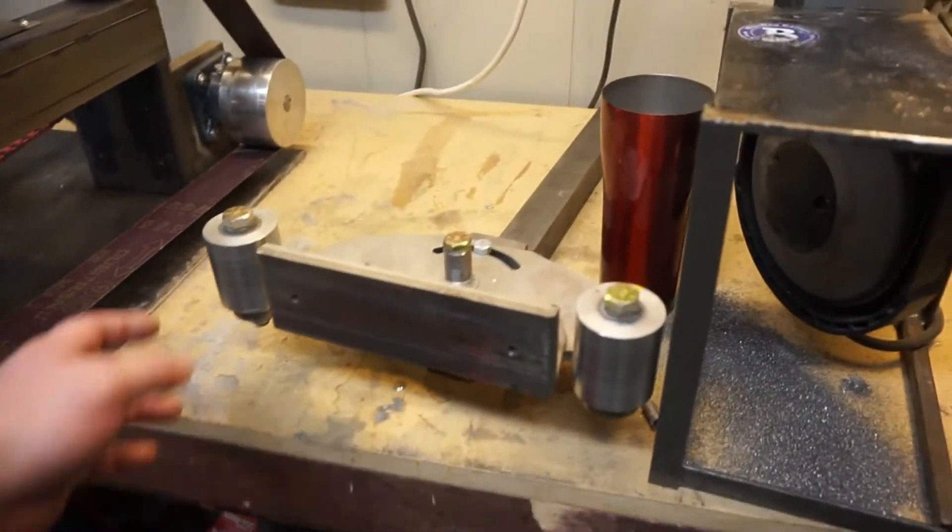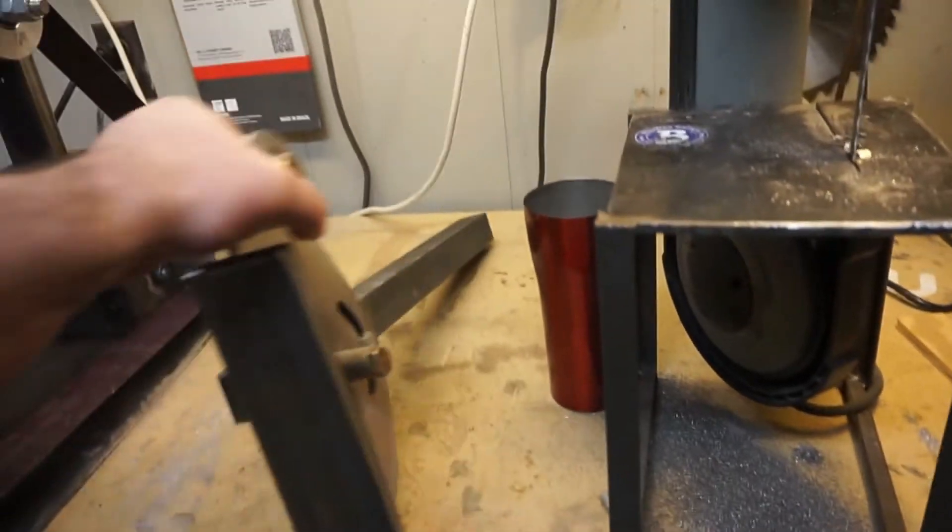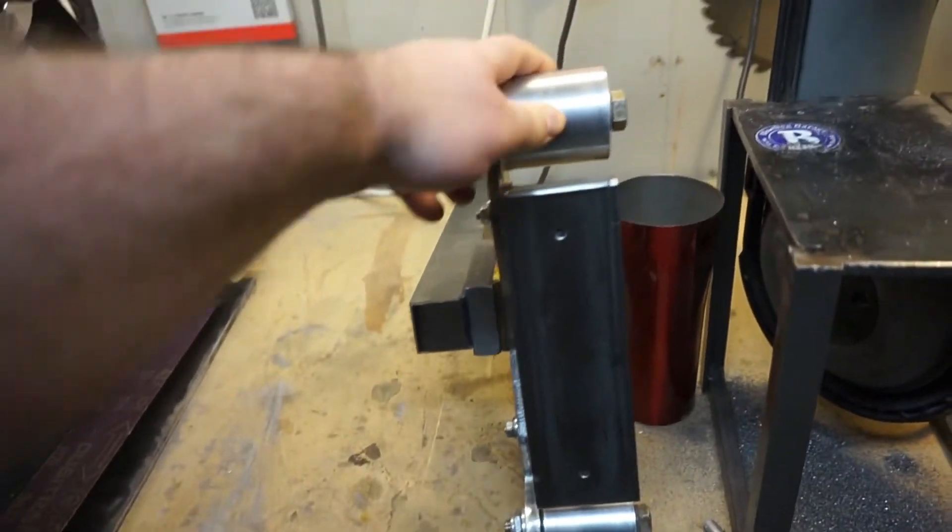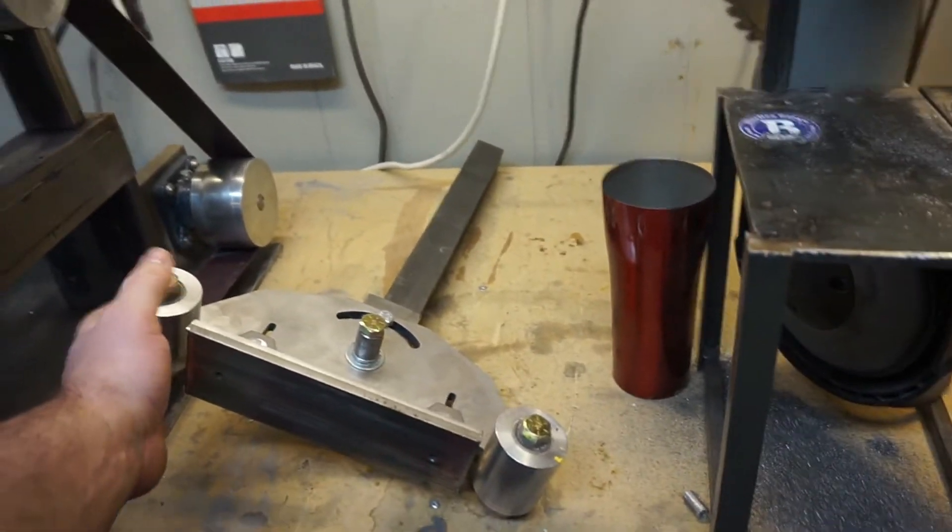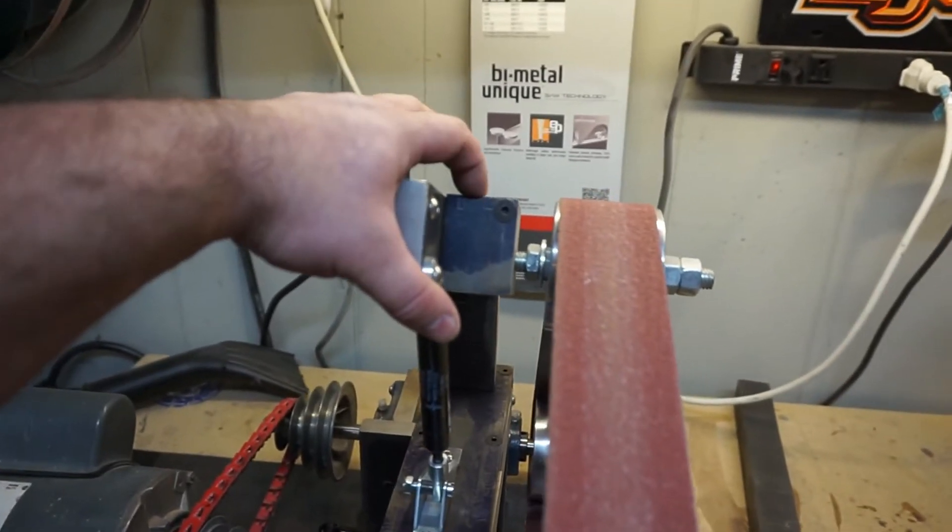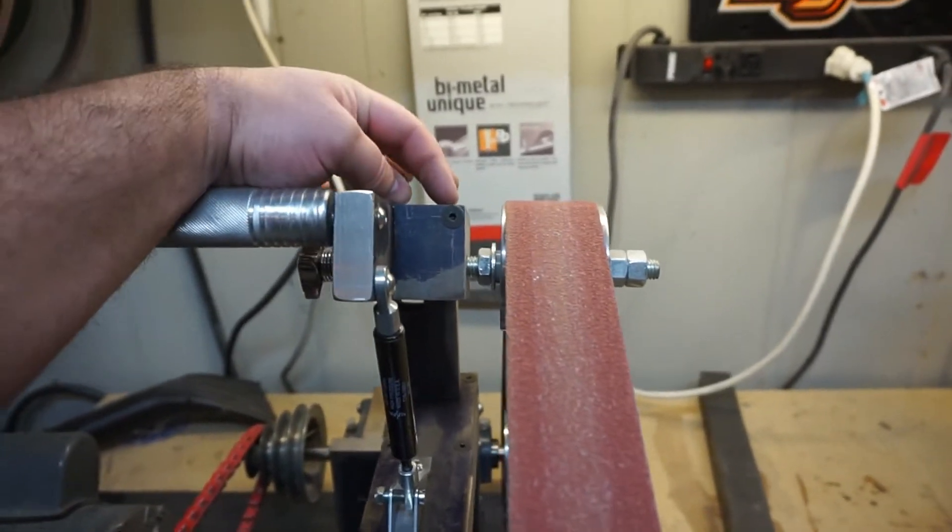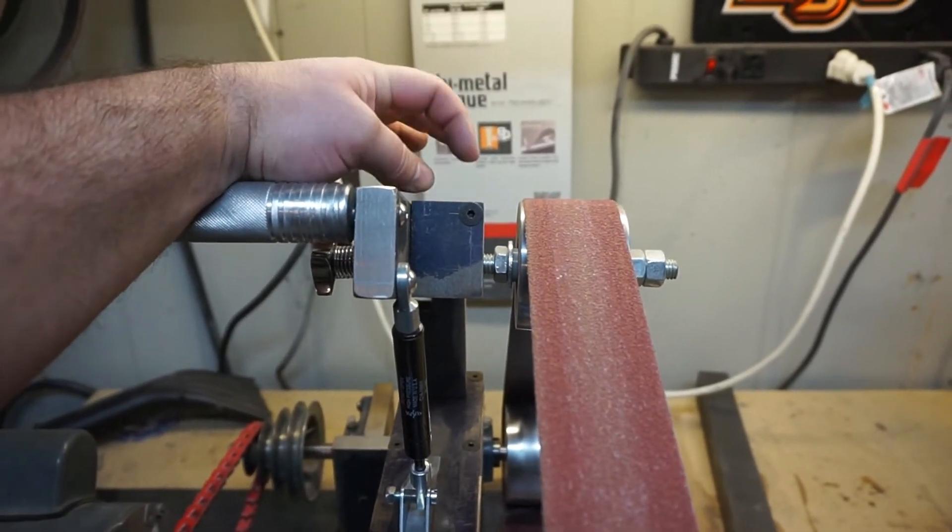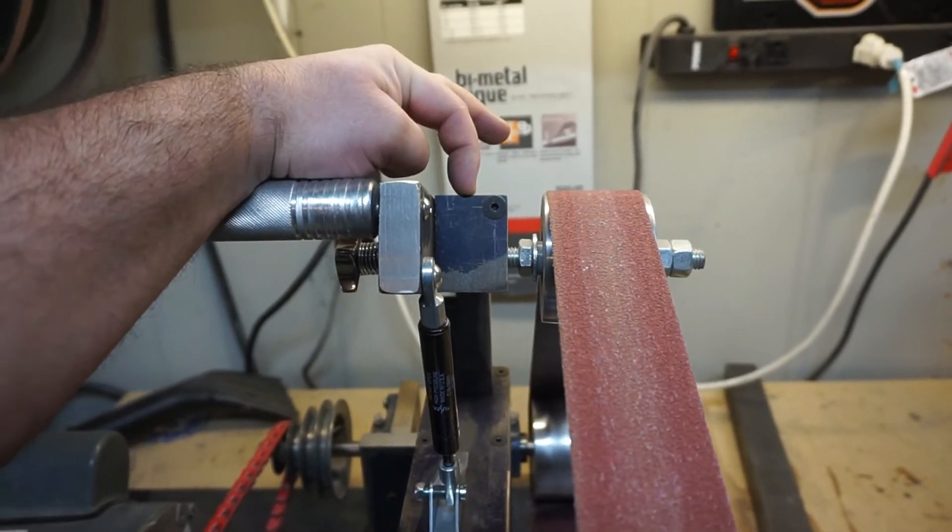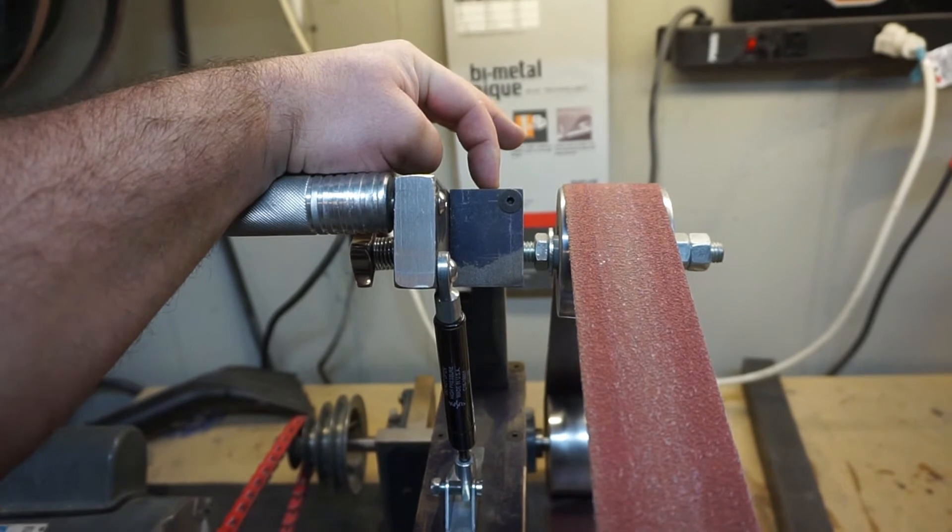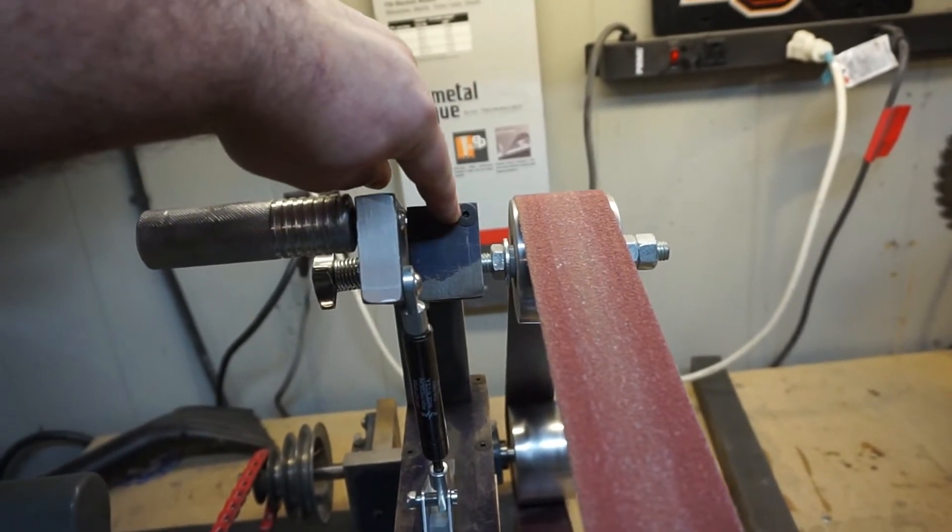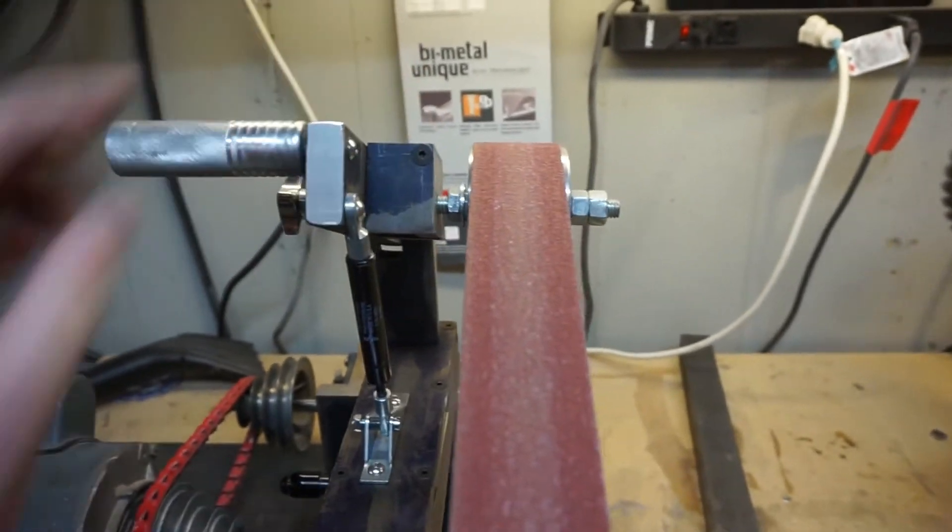I've also built a flat platen. This is the flat platen off my old grinder, just made a new arm for it. Well, that reminds me, one thing I did change on the plans: this called for, I think, a one inch wide piece here with your pivot three quarters of an inch out or something. I made that an inch and a quarter piece with the pivot at one inch, I believe, and it's worked out well for me.